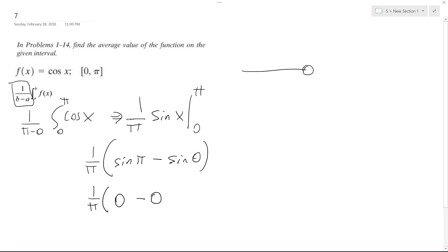Because on the unit circle, zero's right here, and then pi is over here, and sine is y over r, or the radius. Well, the y component's zero at zero, and it's zero at pi over here.